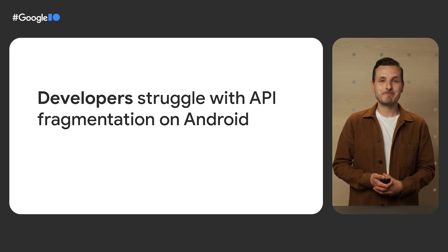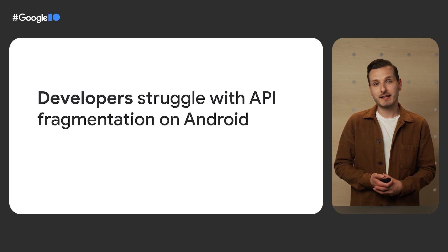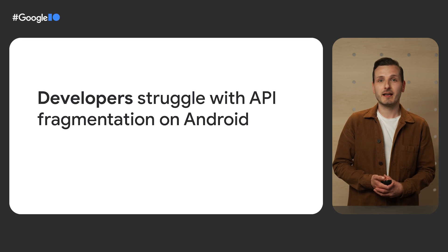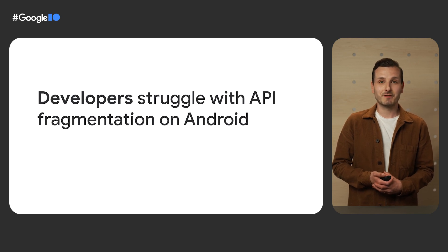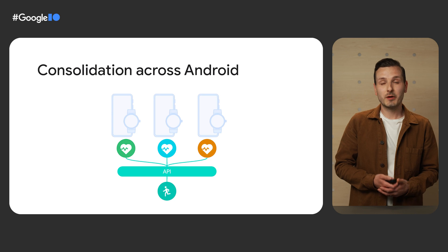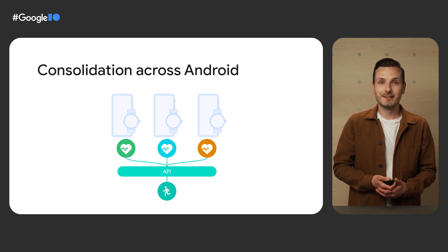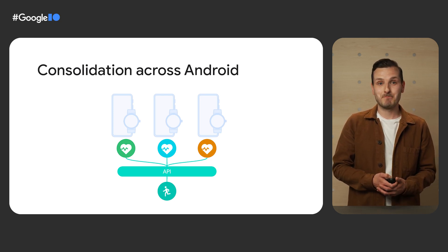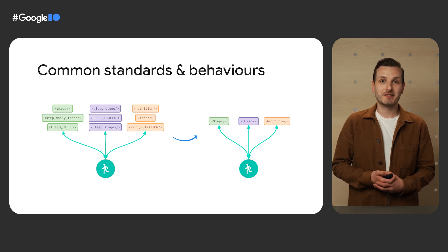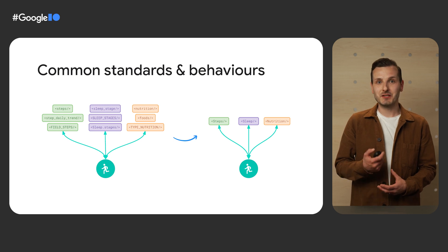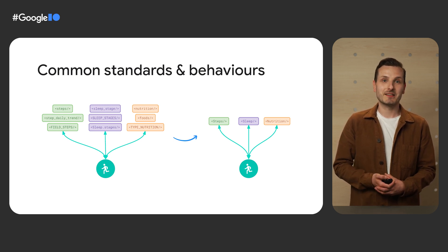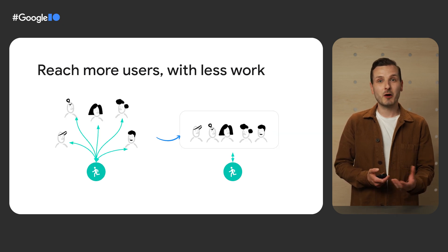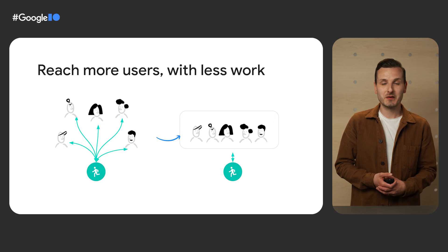We also listened to our developer community. Overwhelmingly, we heard that the number of platforms your apps need to integrate with on Android and maintain is really challenging. Each API has a different schema and different API behaviors. This is not only time consuming, but it is actually very costly to your business. We want to solve these problems by creating a universal solution for Android — no matter which devices your users use or which apps they choose, it will work for them. We want to create common standards with the help of our developer community, making it easier to use the data so that you can bring better insights and experiences to your users. And with a common platform, you will benefit from reaching more users with less work.